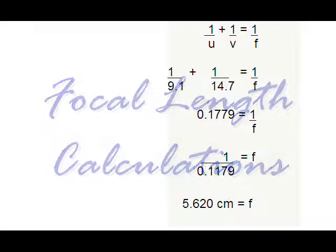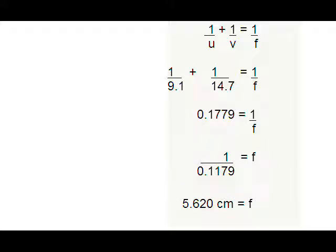From this, we have the measure of U and V, which we will use to calculate the focal length by the formula 1 over U plus 1 over V equals 1 over F. Our focal length was 5.62 cm.